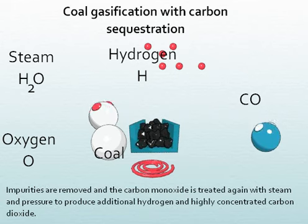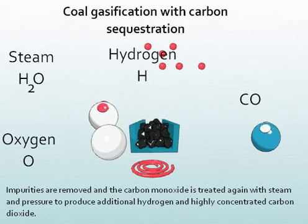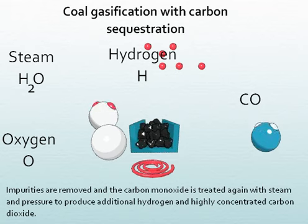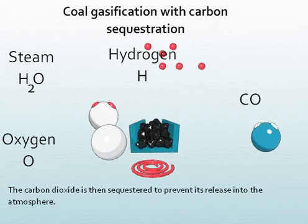Impurities are removed and the carbon monoxide is treated again with steam and pressure to produce additional hydrogen and highly concentrated carbon dioxide. The carbon dioxide is then sequestered to prevent its release into the atmosphere.